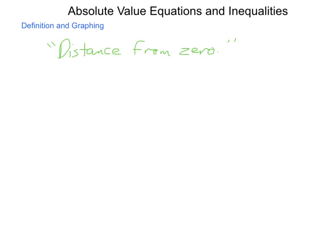Another word often used for absolute value is magnitude, which simply compares how big something is compared to another item. If we're looking at the absolute value of a number or a variable, we're talking about how far that one is away from a point of reference. Typically that point of reference is zero, but it can change depending on the situation. When writing absolute value, we put two vertical lines and whatever we're taking the absolute value of — say the variable a — goes in between. In the end, we're going to have a positive number come out, because absolute value or distance is always positive.